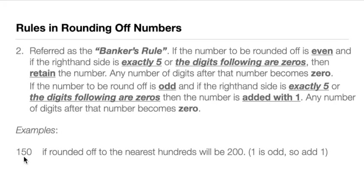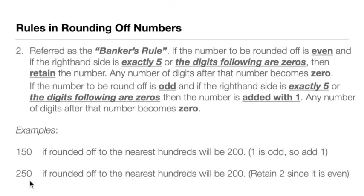When we say exactly 5, it means all digits after that 5 are zeros. If instead we had 151, that would not be exactly 5 — it would fall under rule number 2 since 51 is greater than 50. Another example: 250 rounded to the nearest 100. The hundreds digit is 2, and to the right is exactly 5. We ask: is 2 odd or even? Since 2 is even, we retain it. The answer is 200.